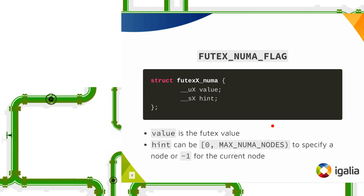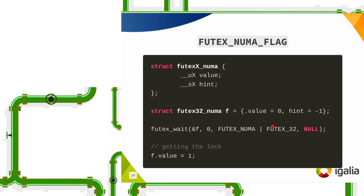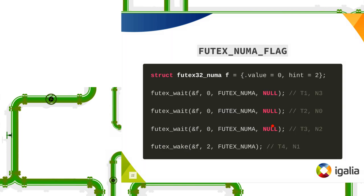And then do note that the minus one will get overwritten. As soon as you actually do the wait, it'll write the actual node number that you landed on in this value so that the wake can find the right hash table. So then every new wait syscall will have to first reset the hint. Otherwise, things will not work as expected.